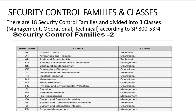Security control families and classes: According to NIST SP 800-53 Revision 4, there are 18 security control families divided into three classes — management, operational, and technical. The 18 control families are: access control, awareness and training, audit and accountability, security assessment and authorization, configuration management, contingency planning, identification and authentication, incident response, maintenance, media protection, physical and environmental protection, planning, personnel security, risk assessment, system and service acquisition, system and communications protection, system and information integrity, and program management.